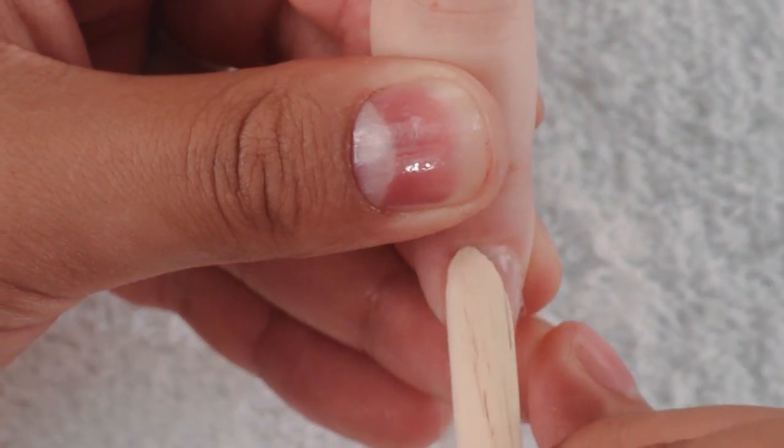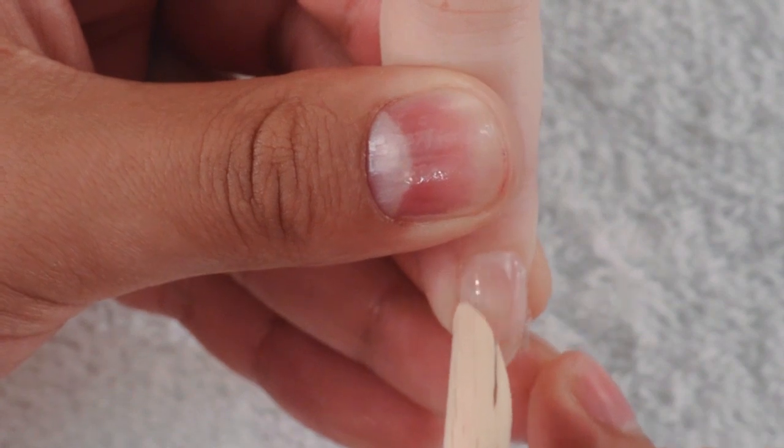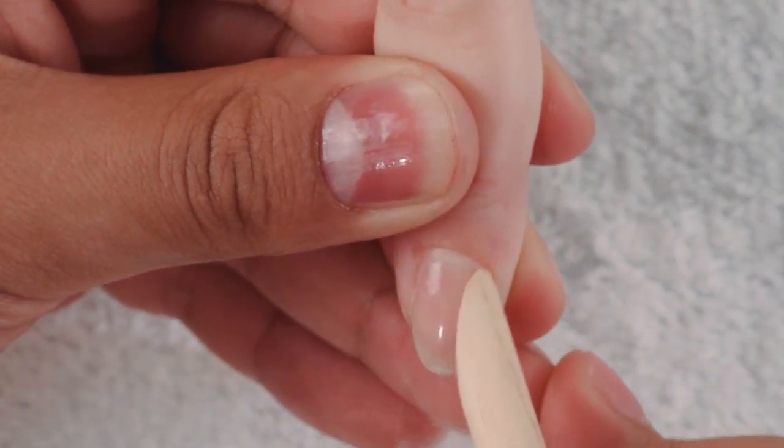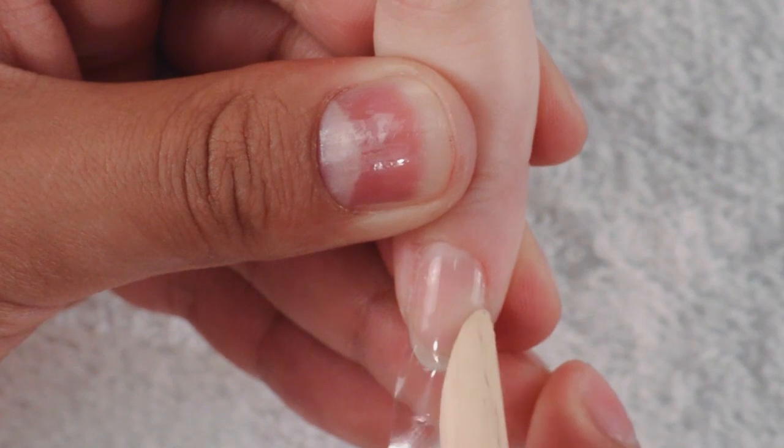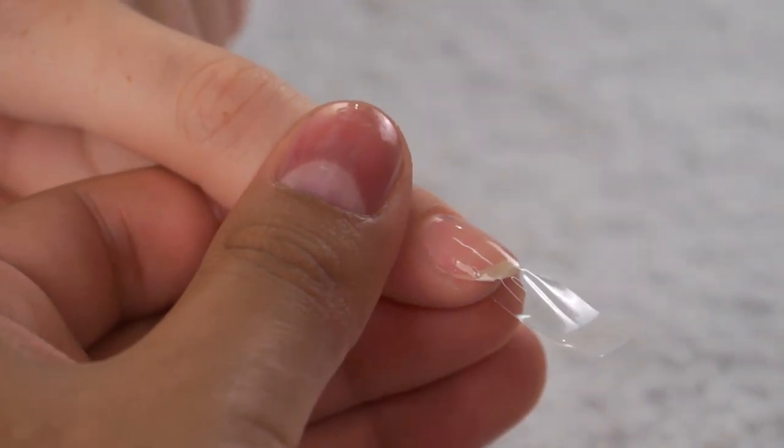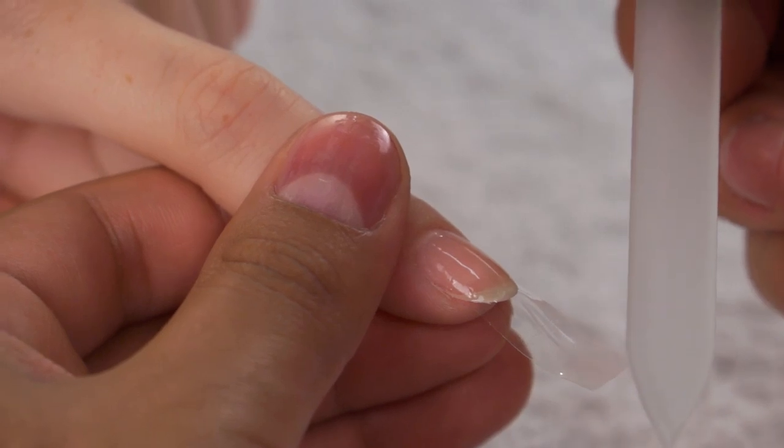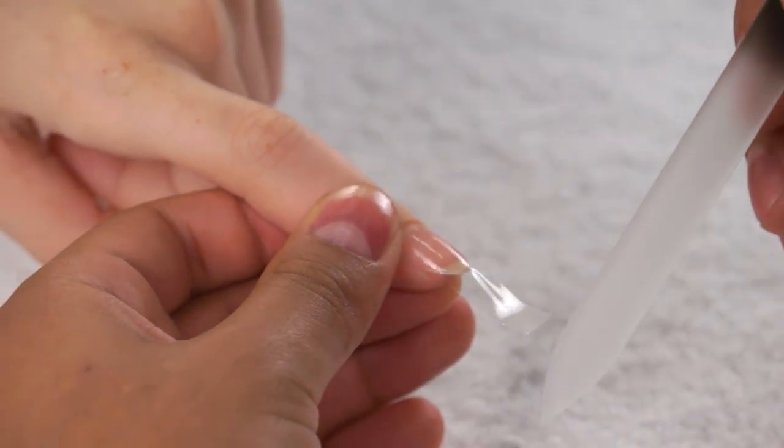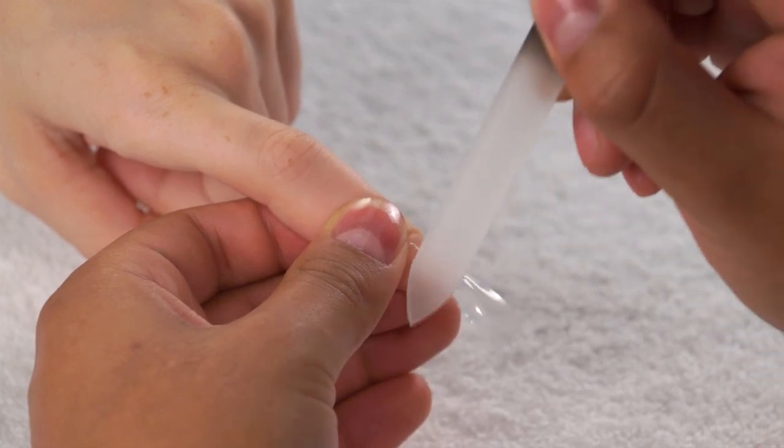Push on the cuticle area until we smooth the entire nail plate. To trim the excess of the Minx coat we're going to use an ultra fine file and we're going to file downwards on the free edge.